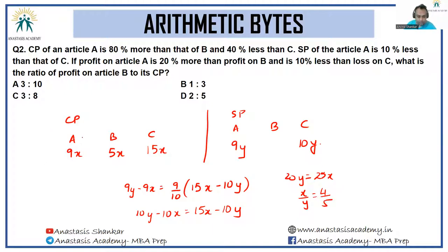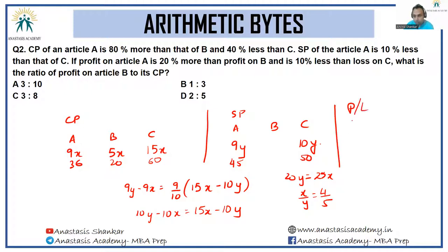Taking x as 4: CP of A is 36, CP of B is 20, CP of C is 60. SP of A is 45 and SP of C is 50. So profit for A is 9 rupees and C has a loss of 10 rupees.